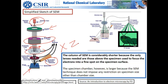Secondary electrons do not provide any elemental mapping. To pull electrons toward the detector, a small amount of positive voltage is applied which attracts the escaping secondary electrons. Because their energy is modified by this voltage, we cannot determine from which atom they originated. Thus SEM secondary electron images do not have elemental contrast, unlike TEM.